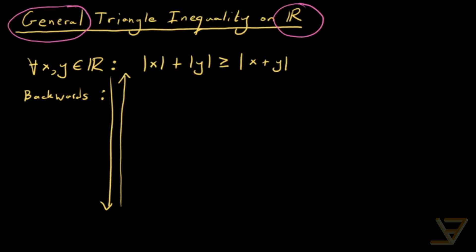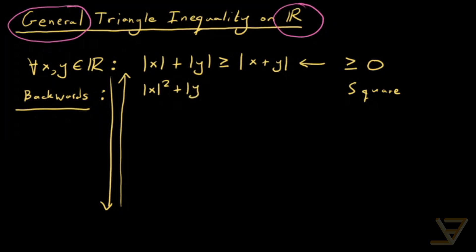The first observation is that both sides are greater than or equal to zero. That allows us to square both sides, because in that case the squaring step is reversible — we want to make sure all of our steps are reversible since we're going backwards. We get the square of the absolute value of x plus the absolute value of y, plus 2·|x|·|y|, greater than or equal to x² plus y² plus 2xy.